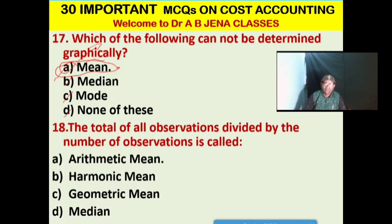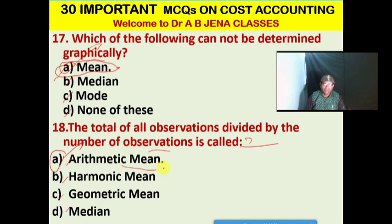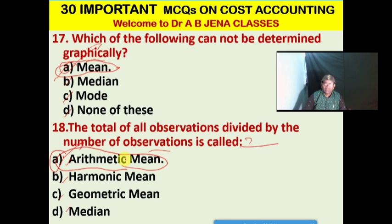Next MCQ: The total of all observations divided by the number of observations is called what? A. Arithmetic mean. B. Harmonic mean. C. Geometric mean. D. Median. A is the right option. The total of all observations divided by the number of observations is called arithmetic mean.